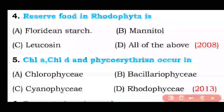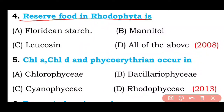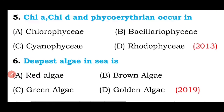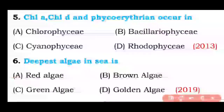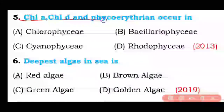Question number four: Reserve food in Rhodophyta is floridean starch, mannitol, leucosin, or all of the above? The correct answer is option A — reserve food in Rhodophyta (red algae) is floridean starch.